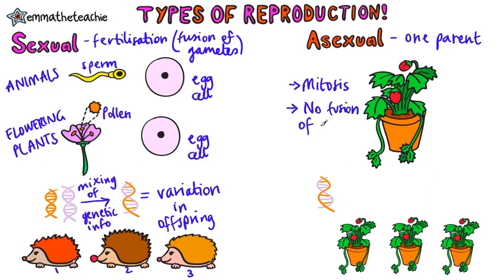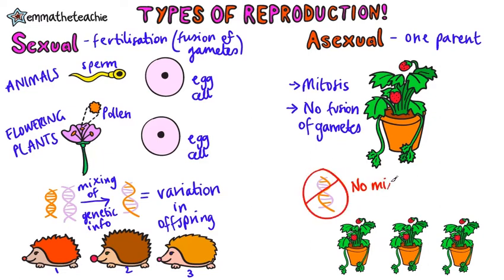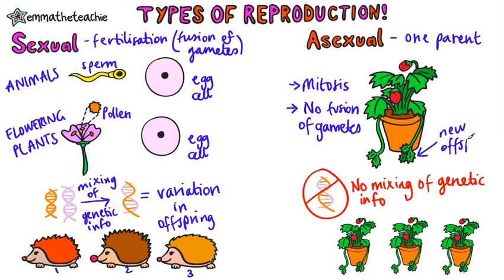The parent cells reproduce by mitosis to make the offspring. So there is no fusion of gametes, or no fertilization. Since there's no fertilization, there's no mixing of genetic information. The new offspring, like this little runner coming off the strawberry plant, is genetically identical to the other runner. Because of this, we call them clones — they are all the same.